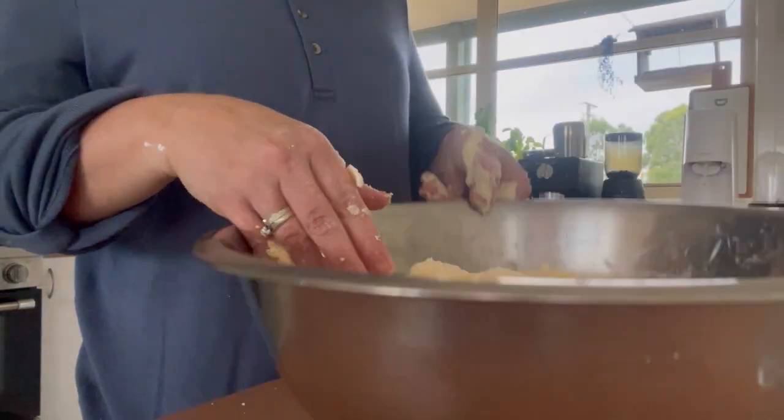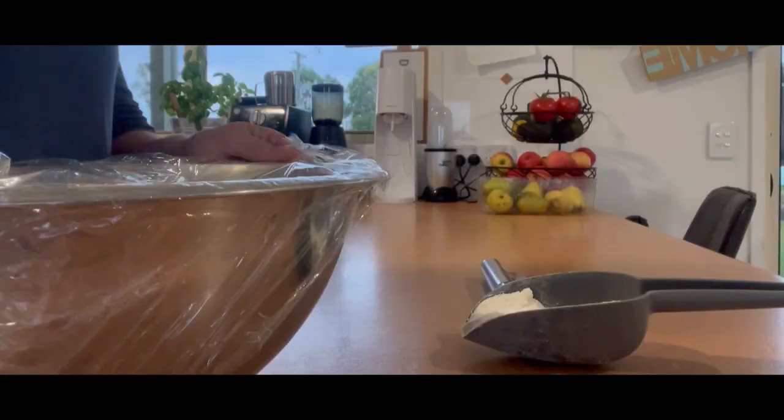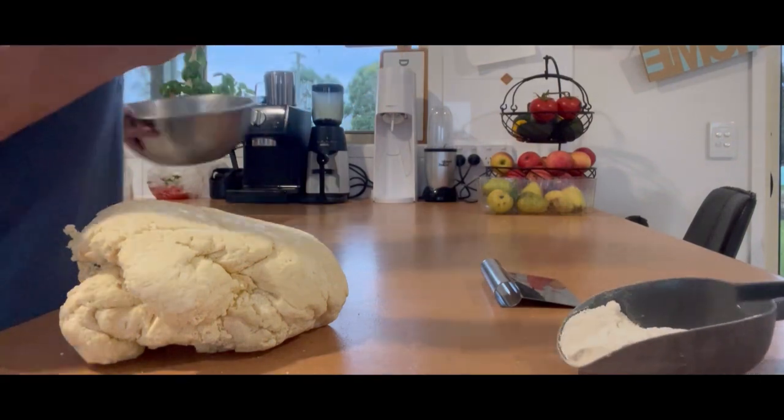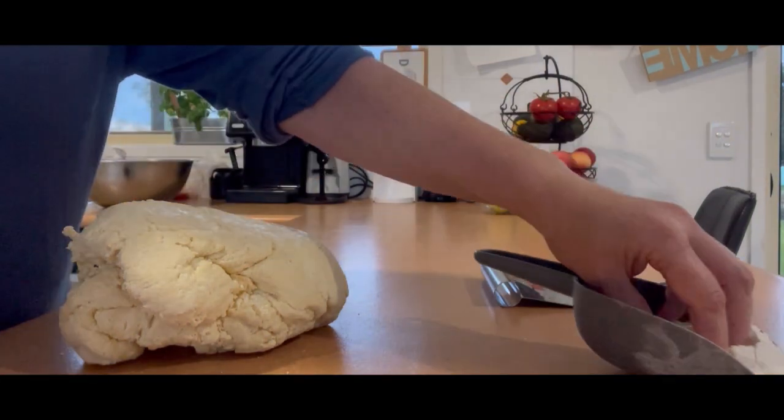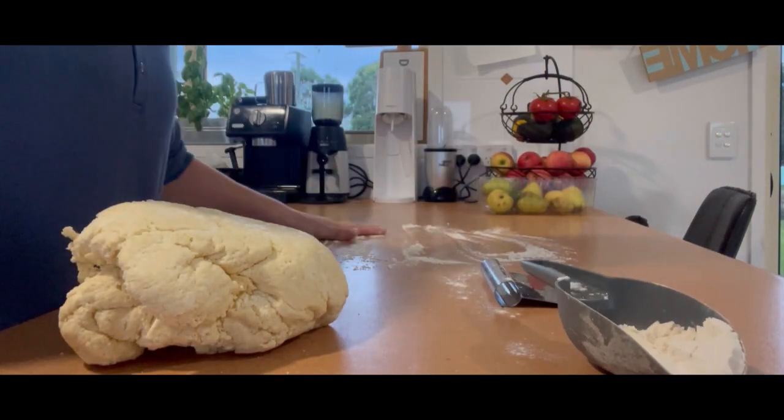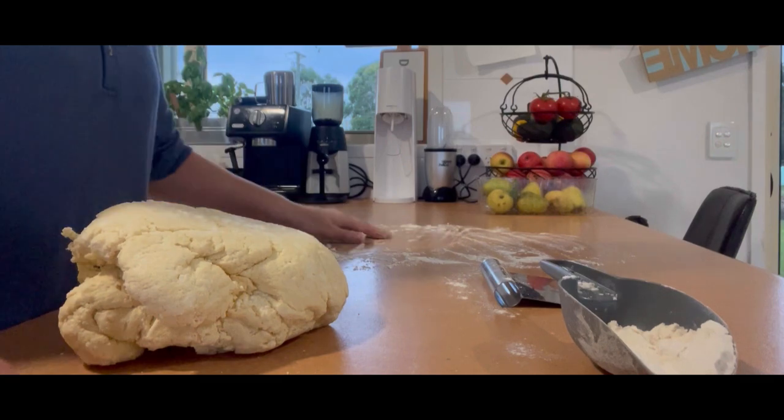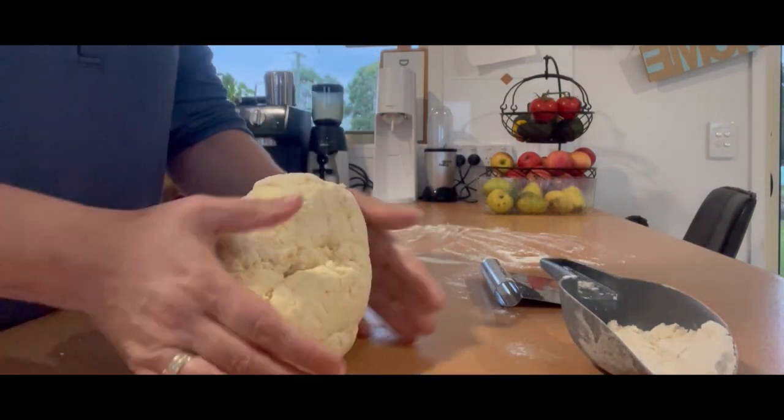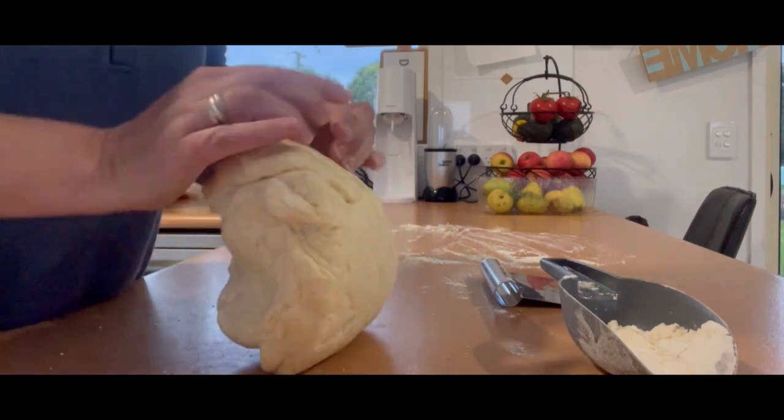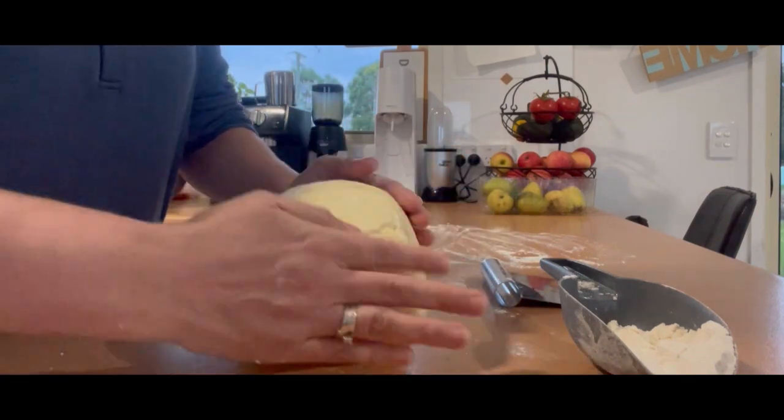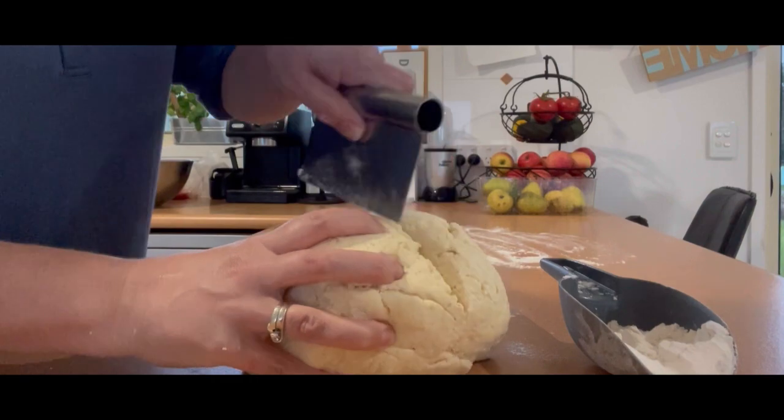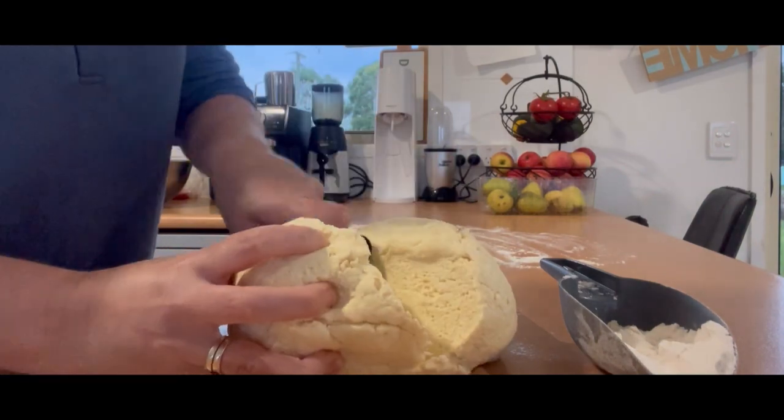So then you just cover it with cling wrap and you put it in the fridge for 20 minutes to rest. I'm going to be dividing this in half and then just using small portions at a time.